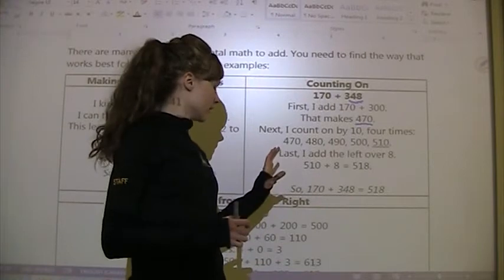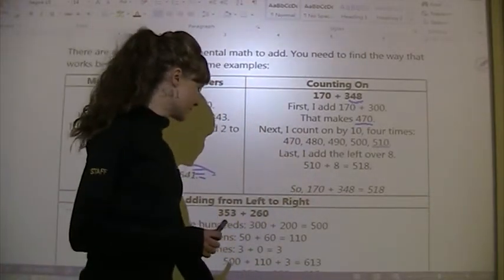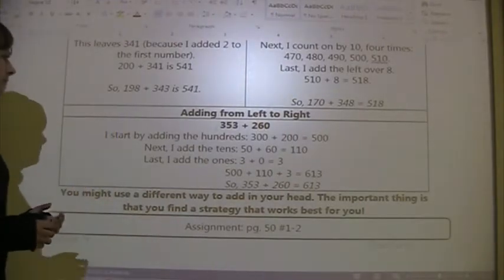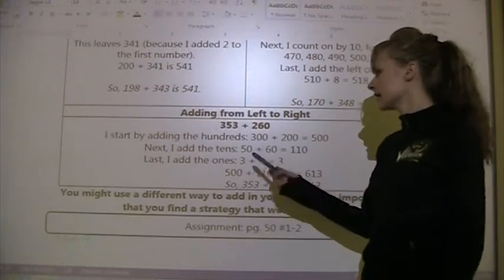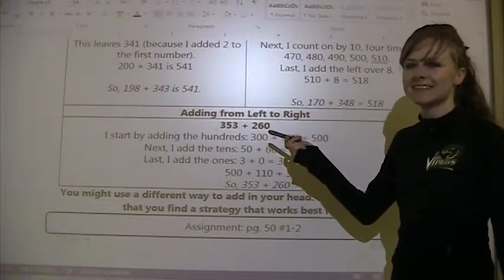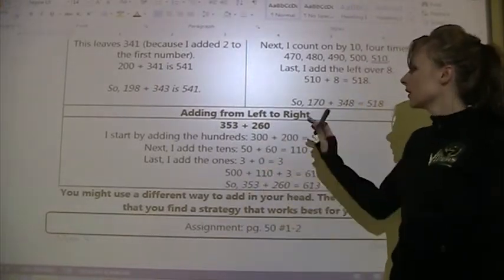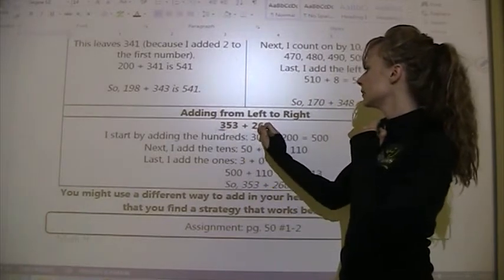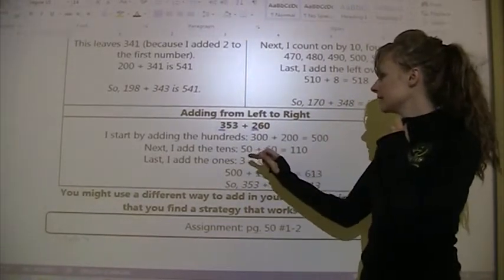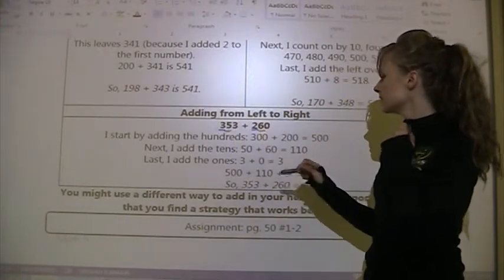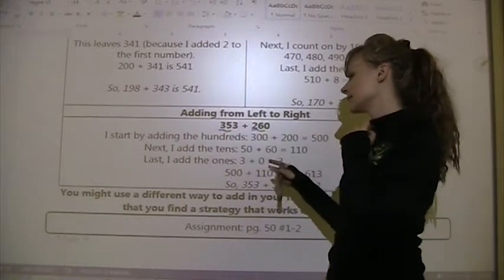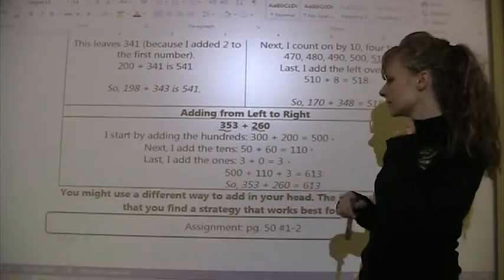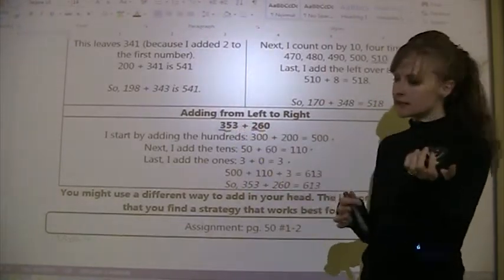The last mental math strategy is adding from left to right, using 353 plus 260. You go from the left side of each number to the right. First add the hundreds: 300 plus 200 equals 500. Then add the tens: 50 plus 60 equals 110. Then add the ones: 3 plus 0 equals 3. Finally, add them together: 500 plus 110 plus 3 equals 613.